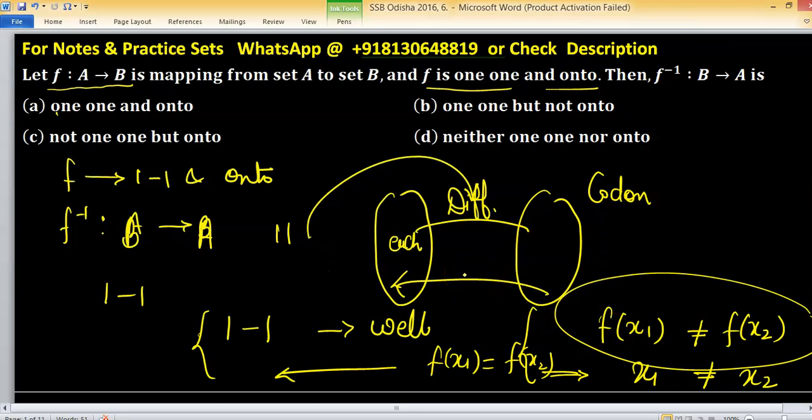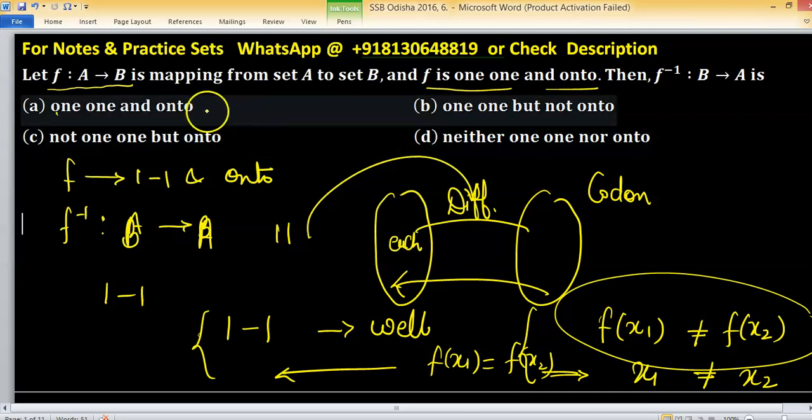So inverse function, if function is one-one and onto, then inverse function is also one-one and onto. So this is direct one line statement and option A is correct.